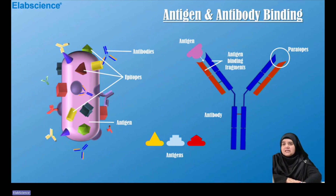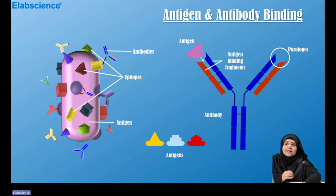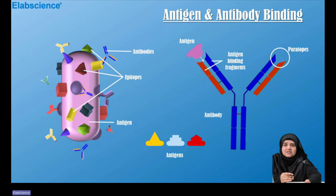Here you can see a diagrammatic description of the antigen on the left-hand side, showing different epitopes on the antigen. These epitopes are the regions where the antibodies bind. For how the antigen binds to the antibody, it binds on the top region of the antibody structure, which is also called the paratope.